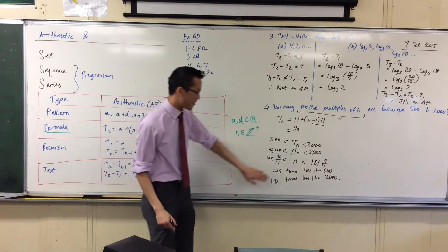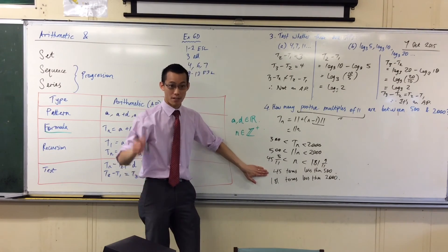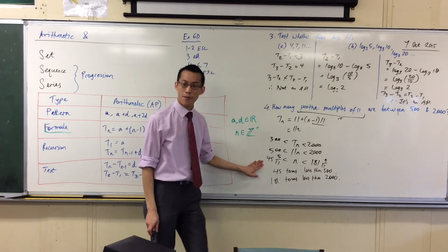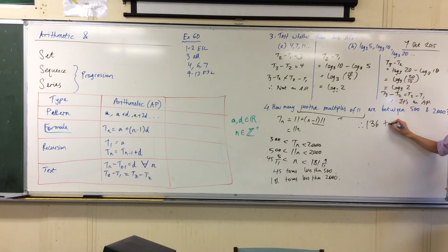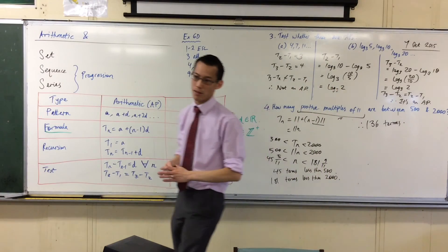Alright so if I have this many less than 2,000 but I need to take away these ones because they're not more than 500, then it's going to be 181 take away 45 which I think is 136, which matches our intuition of something less than 150. We're in the right ballpark.